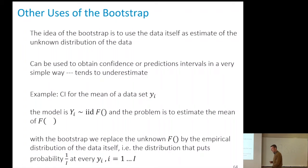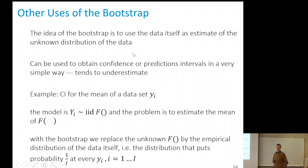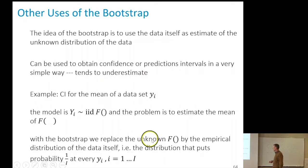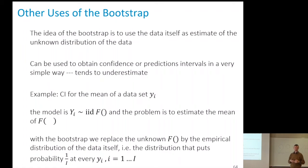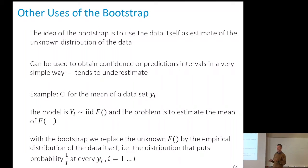The bootstrap is an idea very often used. The idea is to use the data itself and do Monte Carlo simulation. As a toy example, applied to estimating the mean of a dataset: with the bootstrap, draw at random values from your dataset with replacement, compute the mean, find different means for different replay experiments, and look at the distribution of those estimates as a confidence interval. This is valid without assuming normal distribution or even convergence to normal when n is large.